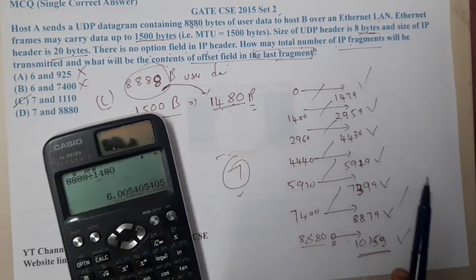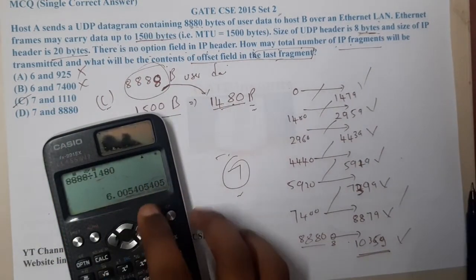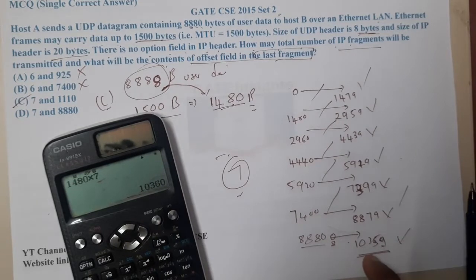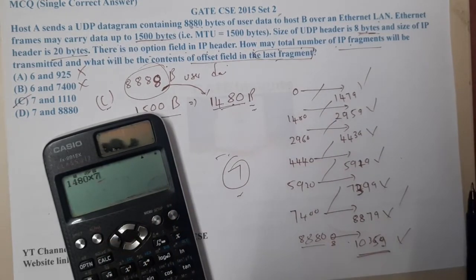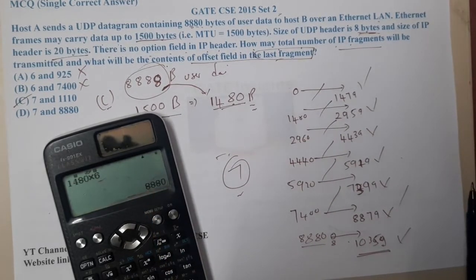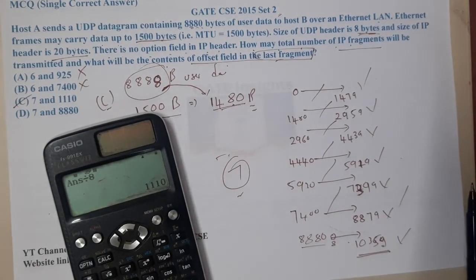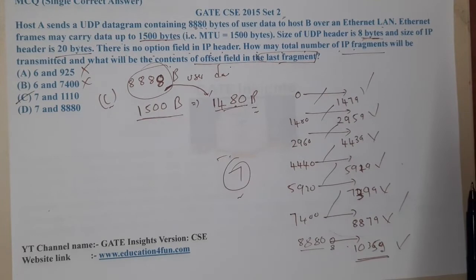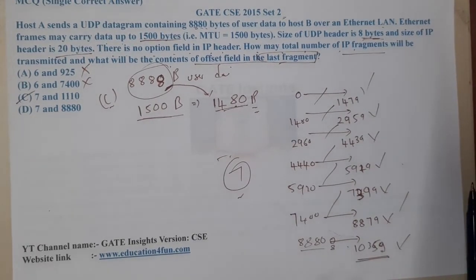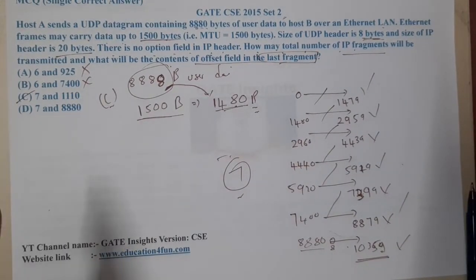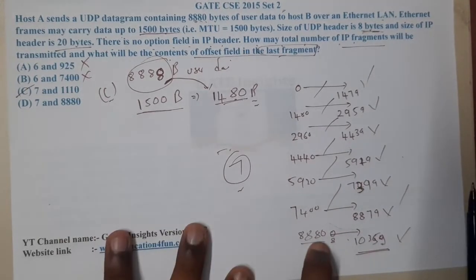With 7 packets confirmed, calculate the starting byte of the last fragment: 6 × 1480 = 8880. The fragment offset is that value divided by 8, which is 8880 ÷ 8 = 1110. This gives option C as the correct answer. This can be solved mentally without pen and paper using a virtual calculator.